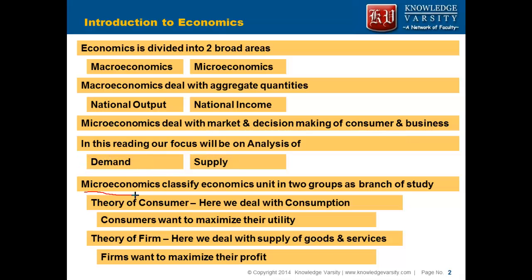In microeconomics we will bring in two groups. One group is the theory of the consumer — how consumption is handled. As a consumer you would want to maximize your utility; you want to get maximum benefit out of a product by paying the least amount of money. Whereas the theory of the firm focuses on how firms think when they supply services or goods. Note that the firm also wants to maximize their profit — they want to sell at the maximum price possible and pay to the factors as low as possible.